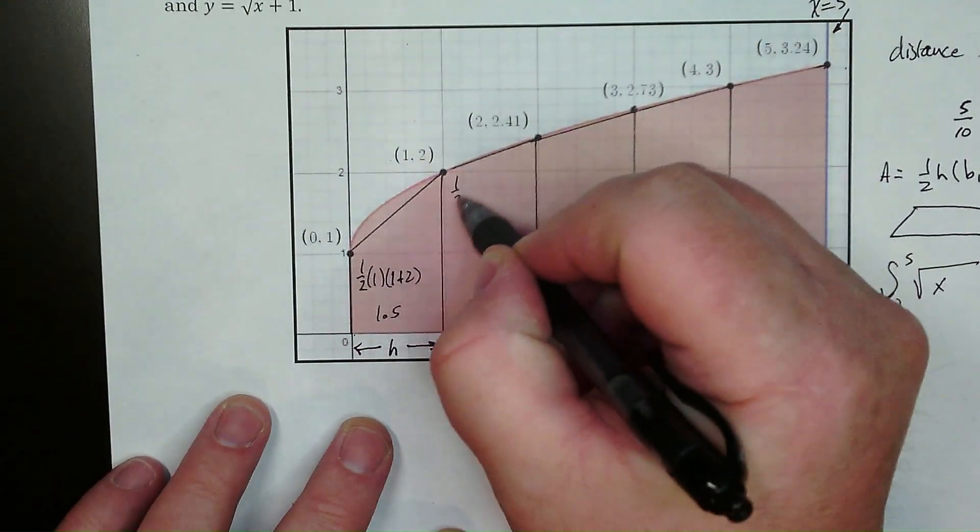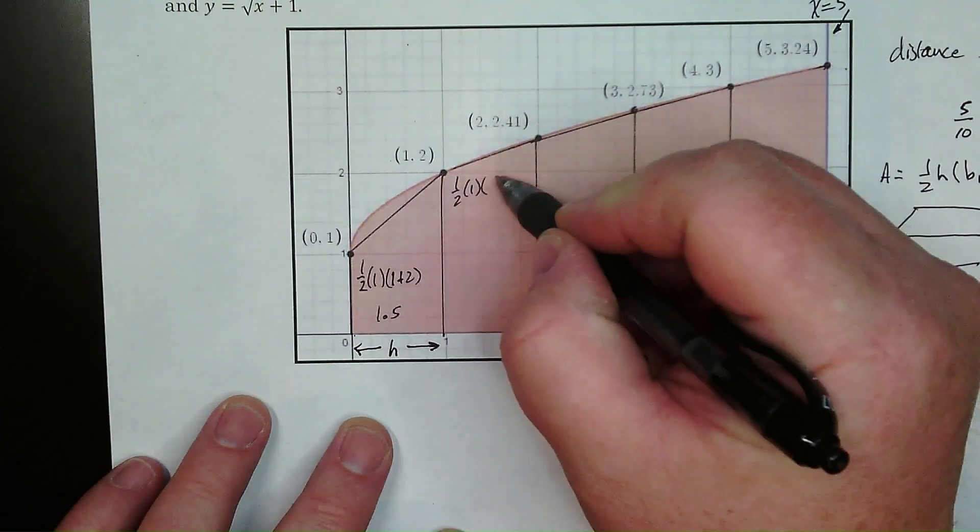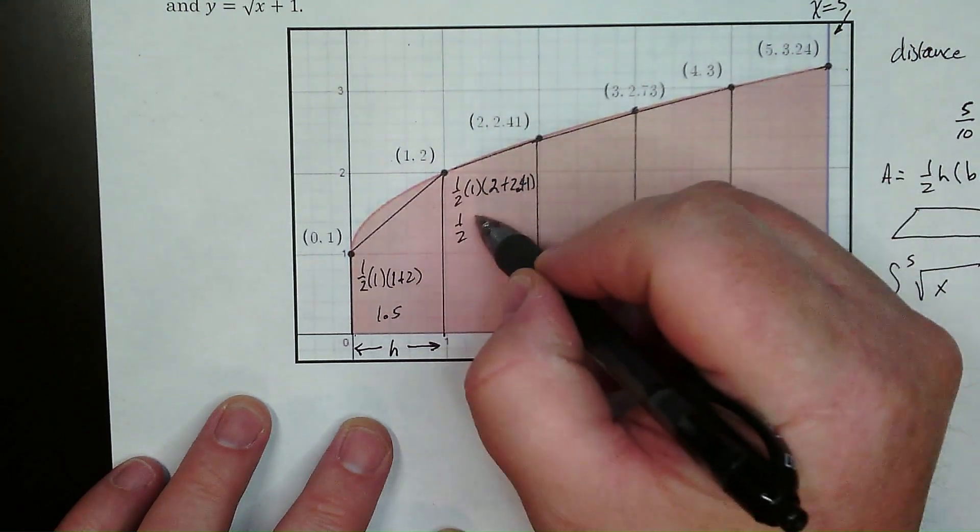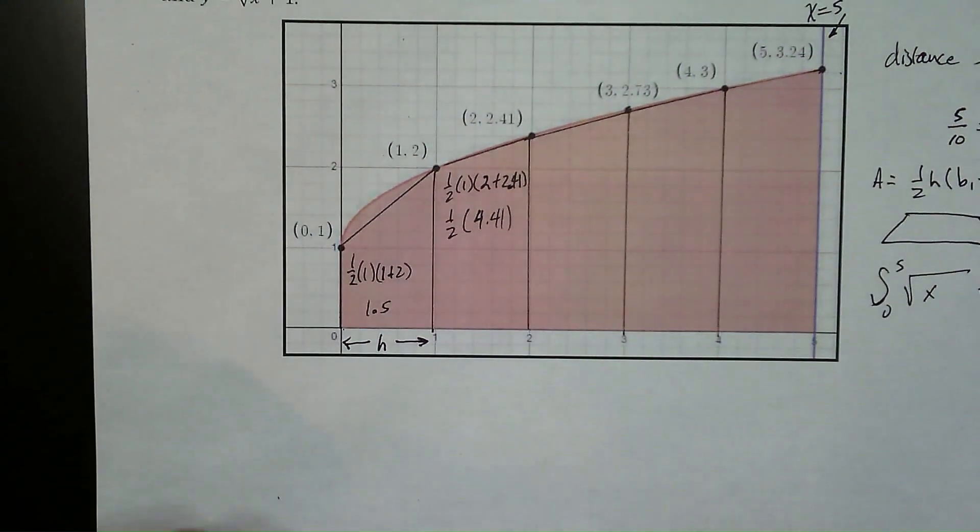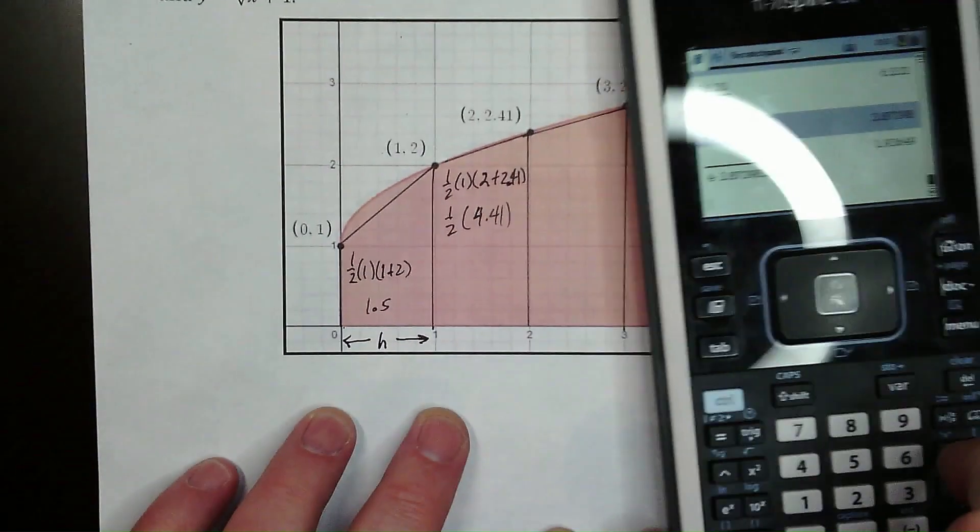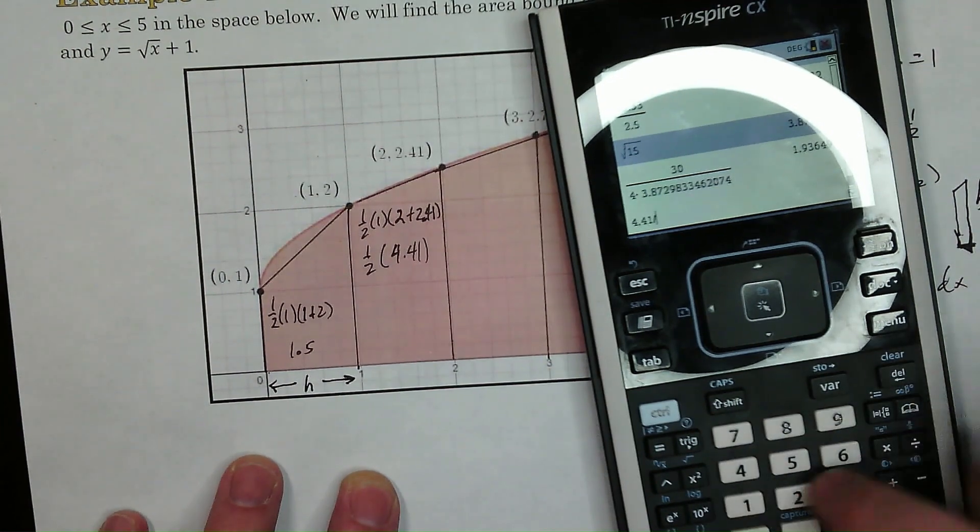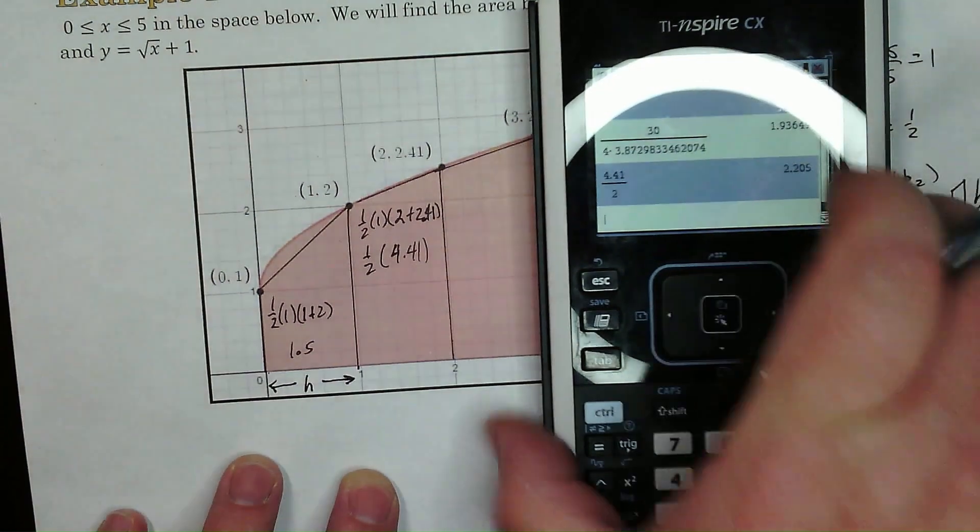Here's what we've got. We've got half of one, one half height, and then sum of the bases. So this base is 2 plus 2.41. So this is one half of 4.41. Now I'm not going to trust my brain to do any calculation right now. So 4.41, we're going to use a fancy calculator right here. So we're going to get 4.41 divided by 2. And of course that gives us 2.21.